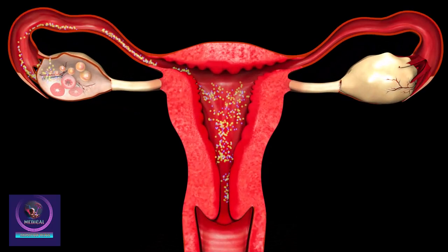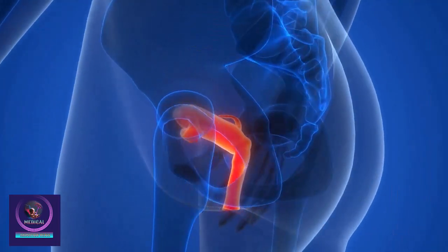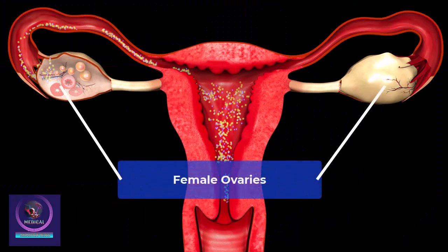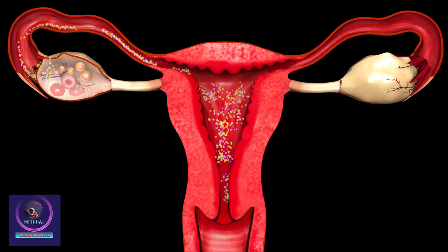The two ovaries are part of a female's reproductive system. They are two oval-shaped organs found in the pelvis, on either side of the uterus, also called the womb. They look like large almonds.